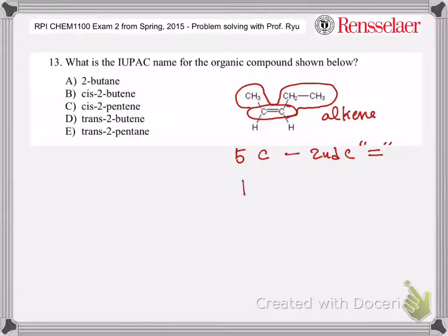Five carbons means pentane, but now this one becomes pentene because this one is a double bond. Which carbon? The second carbon. So 2-pentene becomes essentially the backbone of the molecule.